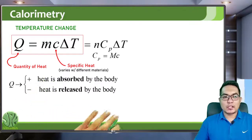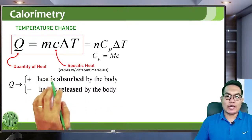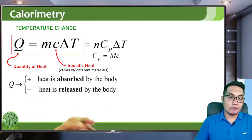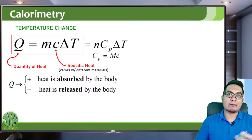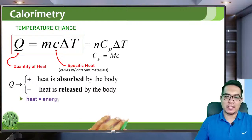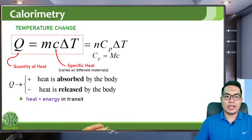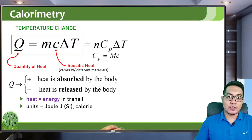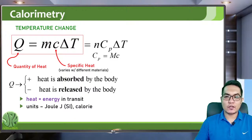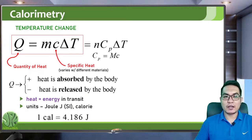The quantity of heat Q is positive when heat is absorbed by the body, and negative when heat is released by the body. Heat is actually energy in transit, so the standard unit is joules. There is also another unit called the calorie — one calorie is 4.186 joules.